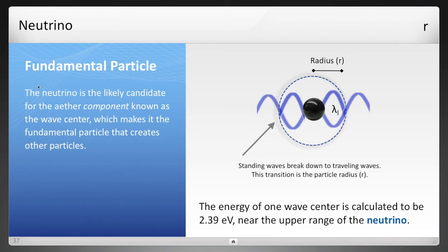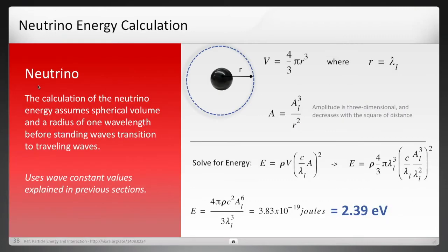But first, how did I calculate that energy value of 2.39 electron volts? Well, you remember from the last section that particles are standing waves of energy, and in the case of the neutrino, it has one wave center, and all standing waves can be calculated based on a number of wave centers, and the fundamental particle has just one. This is a red slide, so you can pause here and read through it later. But this is the details of how to get from those wave constants to that value of 2.39 electron volts.